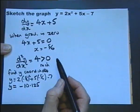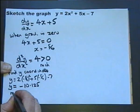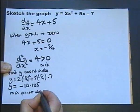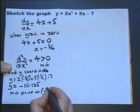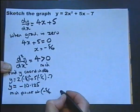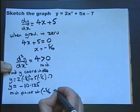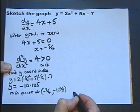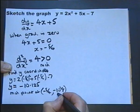So I've now got the coordinate and I know it's a minimum point at minus 5 over 4, 1 and a quarter, 1.25, minus 10 and an eighth. So I can use that to sketch the graph.